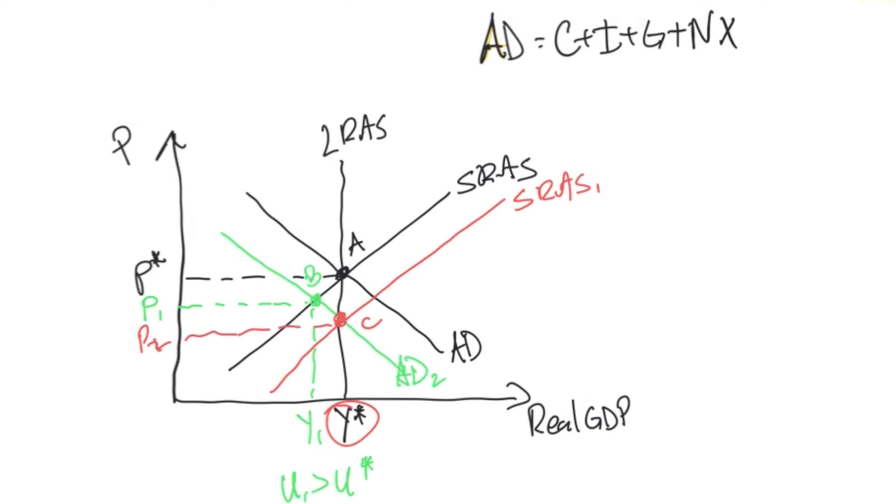However, now our employment is going to be at U star. That means we are able to hire more employees and get back to our old production output. Price levels are lower.